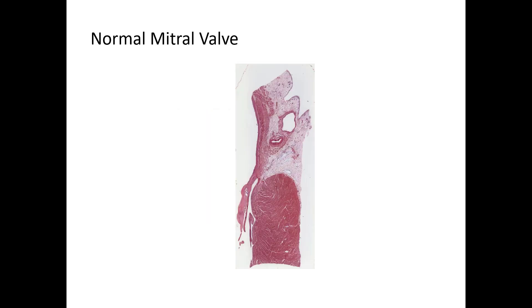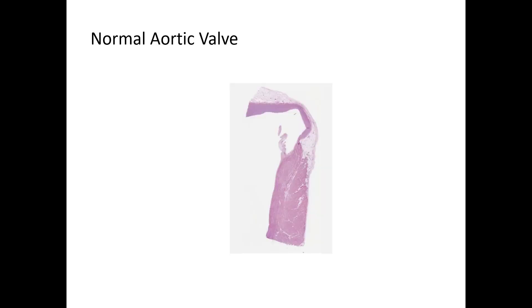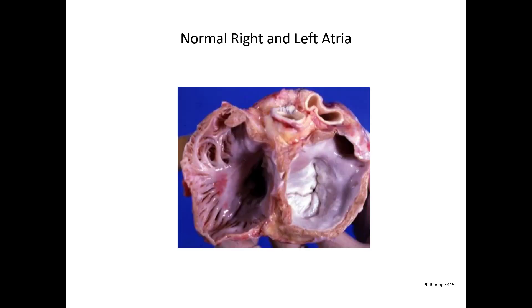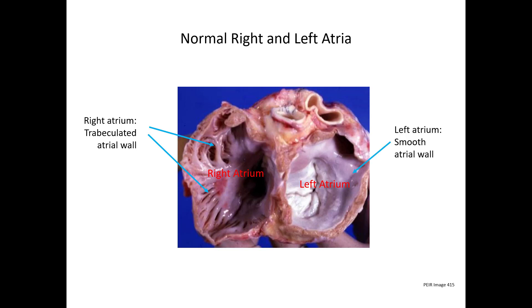Let's go on to our summary. The first slide was a normal mitral valve — you can stop the video and name all the structures to test yourself. The next slide was a normal aortic valve, and again you can test yourself. The next slide is a gross picture of the normal right and left atria. The right atrium has a trabeculated atrial wall, while the wall of the left atrium is smooth. This up here is the opening of the left atrial appendage.